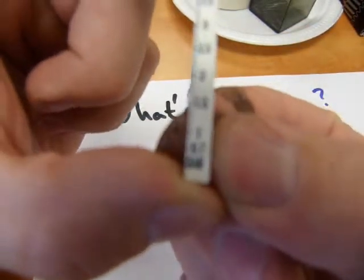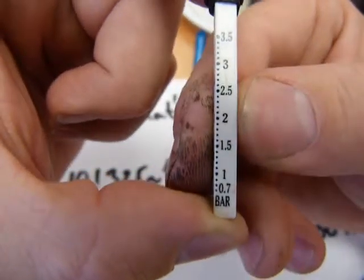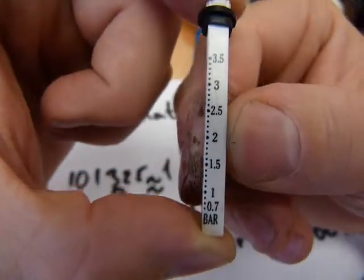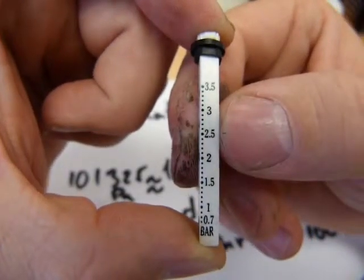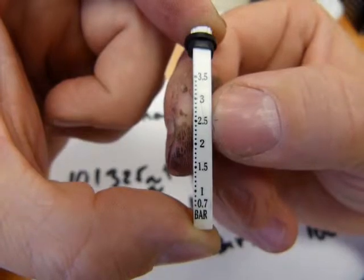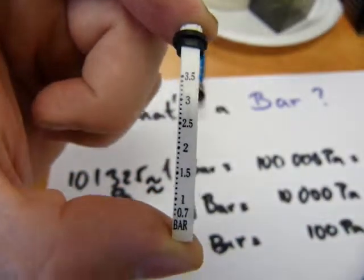So two bars would be two times the atmospheric pressure, three would be three times. Tire pressure in many metric countries is set and specified in bars of pressure. So that's how this works.